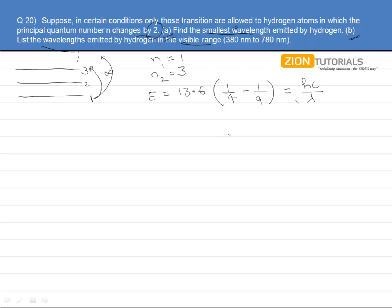So this gives us the value of wavelength to be 103 nm. So this is basically the smallest wavelength emitted by the hydrogen if this restriction is put up.